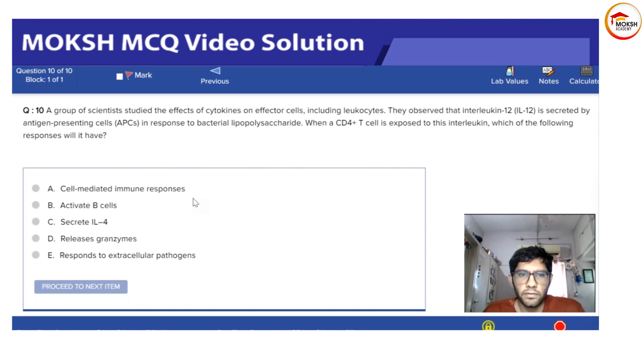Option A: Cell-mediated immune response. Option B: Activate B cells. Option C: Secrete IL-4. Option D: Release granzymes. Option E: Response to extracellular pathogens.